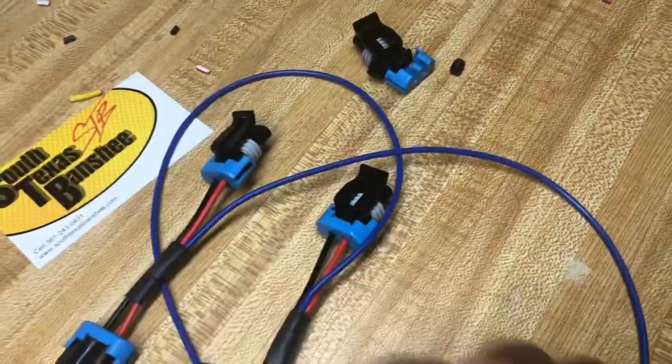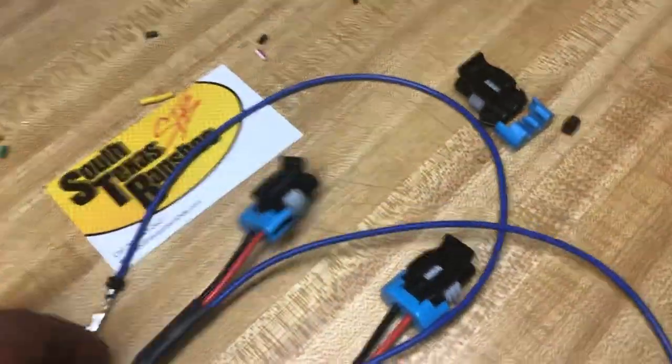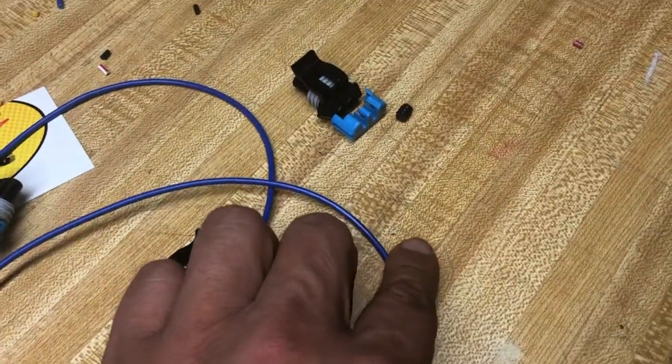Then you've got a power feed out, which is this blue wire here. Each one of these is going to go to your headlights to illuminate your eyebrow.